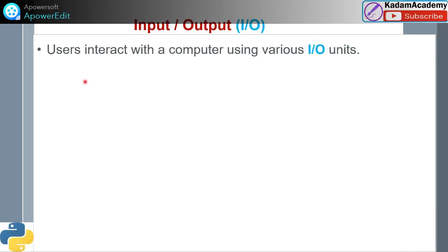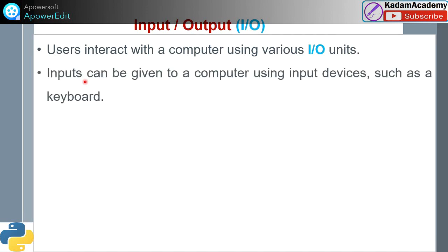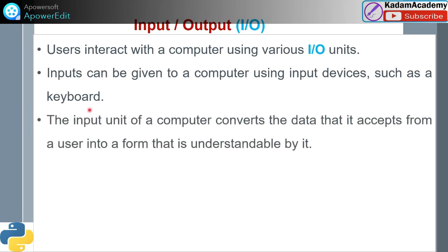The user interacts with a computer using various input or output devices. Units can be given to the computer using input devices such as a keyboard and mouse. The input unit of a computer accepts data from the user and converts it into a form understandable to the computer — bytes.